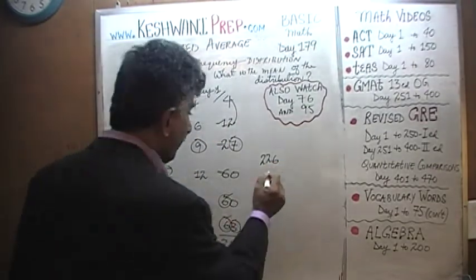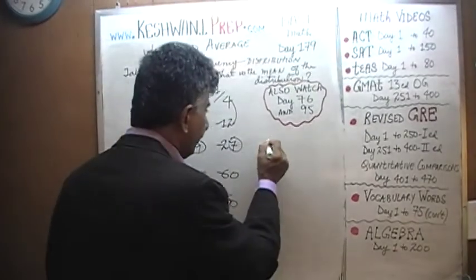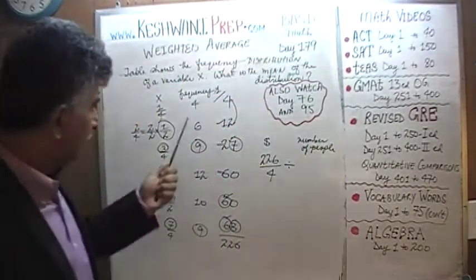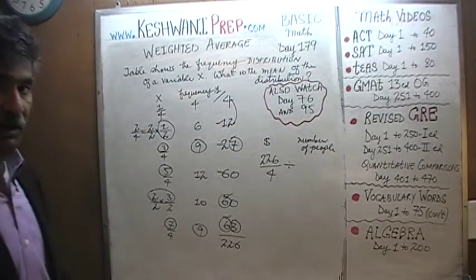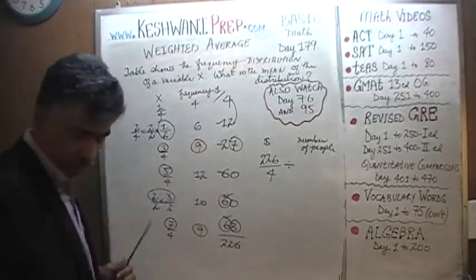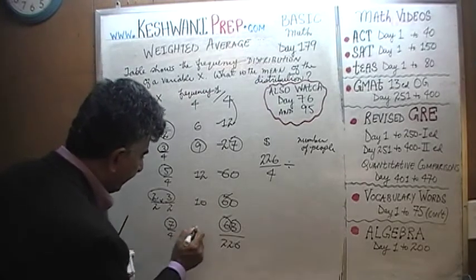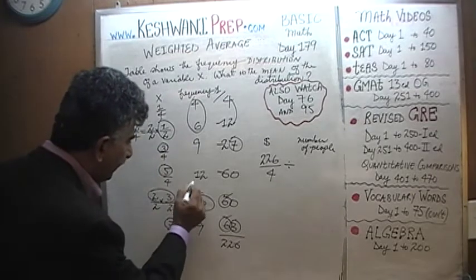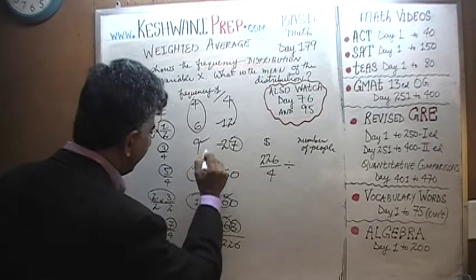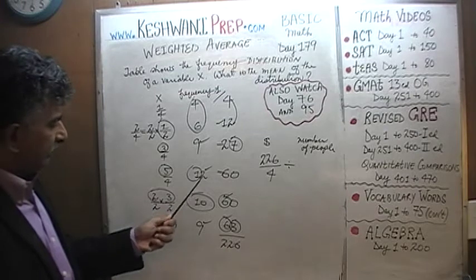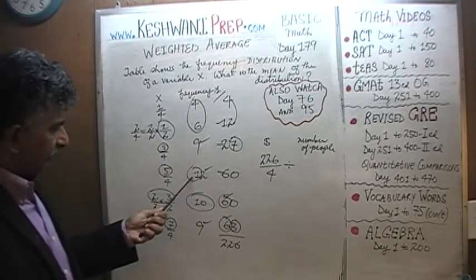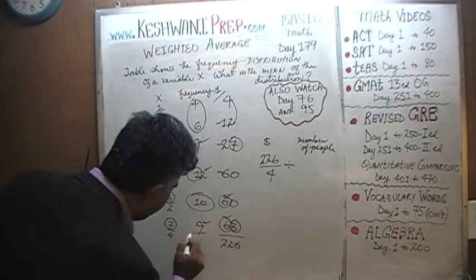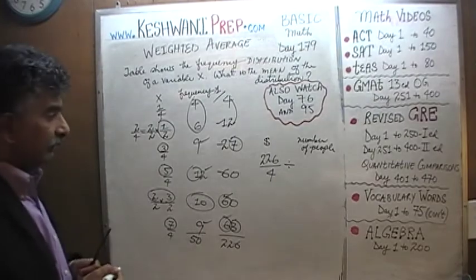226 quarters divided by 4 gives us the total dollar amount. Now we divide by the number of people. Adding the frequencies: 4 plus 6 is 10, plus 9 is 19, plus 12 is 31, plus 10 is 41, plus 9 is 50. So we have 50 people total. We divide by 50.